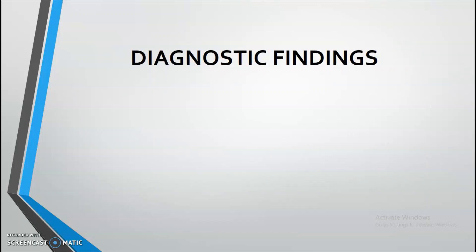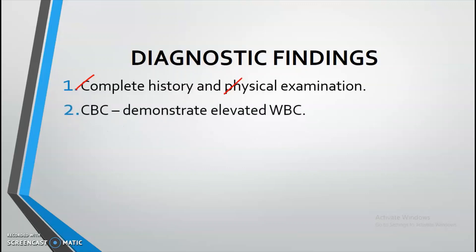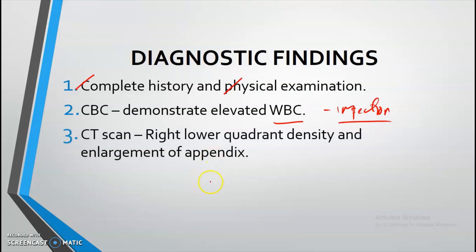For diagnosis, a complete history is taken — checking for fever, nausea, loss of appetite — followed by physical examination to identify the signs: Psoas, Jarring, Rovsing's, Hamburger, and McBurney's point. A CBC is obtained; it will demonstrate an elevated WBC indicating infection. A CT scan will visualize right lower quadrant density and enlargement of the appendix.